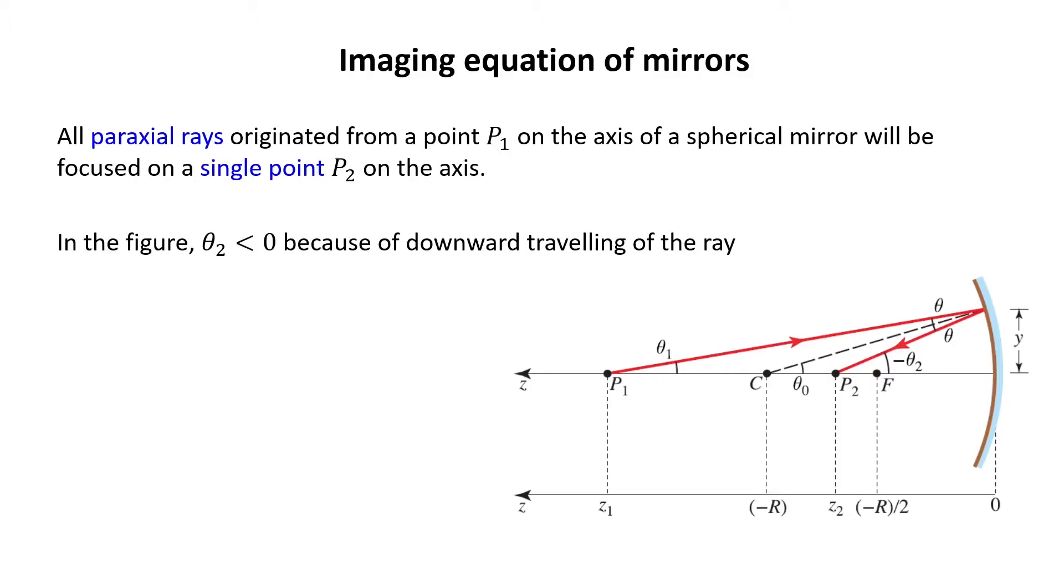In this figure, we have chosen theta 2 negative because of downward traveling of the ray. This is a matter of convention. In some other textbooks, it is regarded to be positive. It doesn't matter so much.